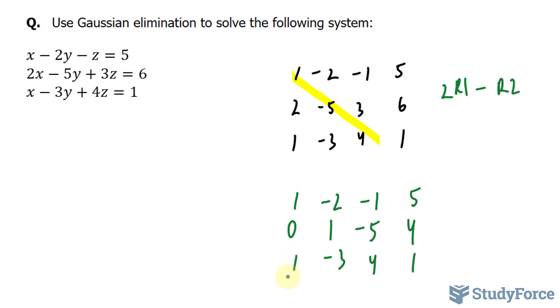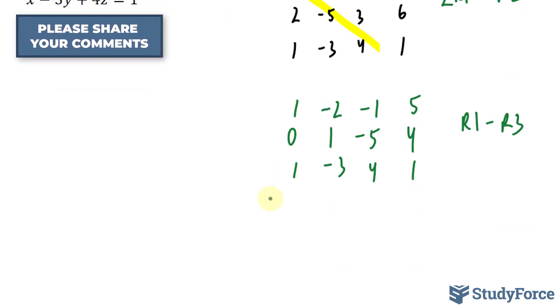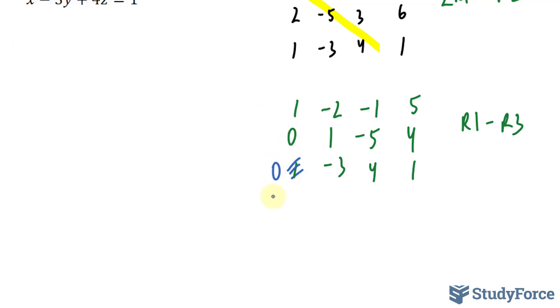Next I need to make this 1 as a 0, and that's easy to do. I'll take row 1 minus row 3 and I'll replace row 3 with my answers. So 1 minus 1 is 0. Negative 2 minus negative 3, that's like saying negative 2 plus 3, that's positive 1. Negative 1 minus 4, that's negative 5. And 5 minus 1 is positive 4.